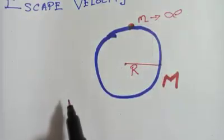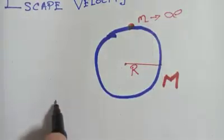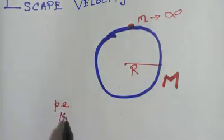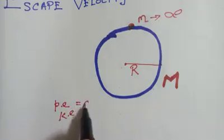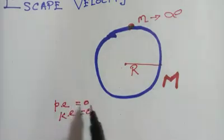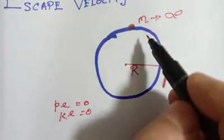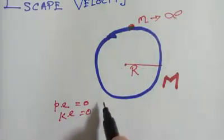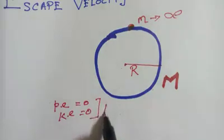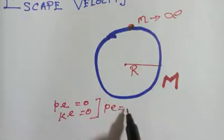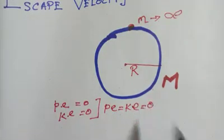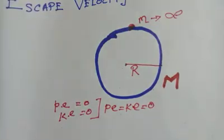At infinity, both the potential energy (PE) and the kinetic energy (KE) are always equal to zero. So for a body traveling from the earth going to infinity, both the potential and kinetic energy are zero.